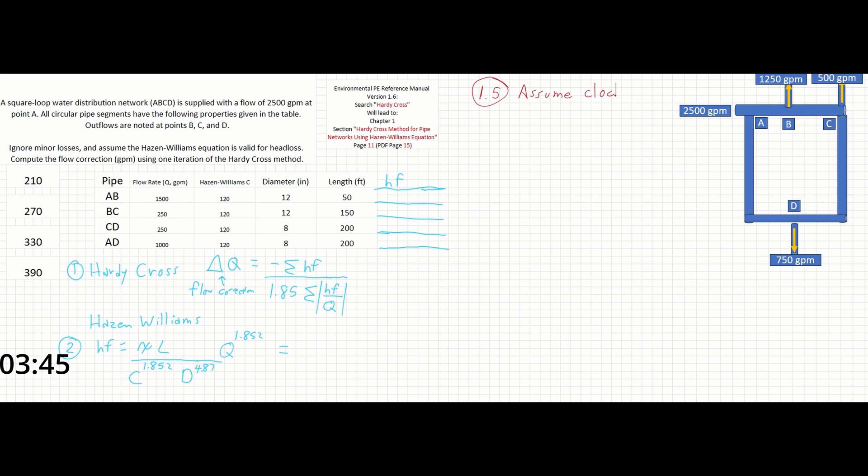Now before we do any calculations, there's one more thing we need to do, and that's make sure that each of our flows is either positive or negative. We're going to call this step 1.5 at the top and assume a convention of clockwise flow being positive and counterclockwise flow being negative. Let's look at the information given in the table and apply it to the figure in order to figure out which pipes have a positive flow and which pipes have a negative flow.